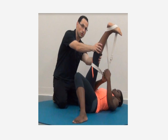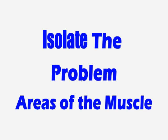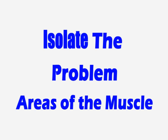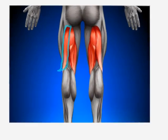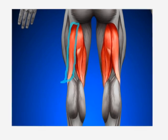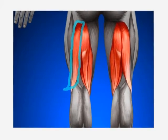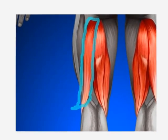Let's talk about a kinesiological stretching approach to isolate the problem areas of the muscle. While each head of the hamstring is targeted individually due to its problematic nature, let's talk about the long head of the bicep femoris and its approach.